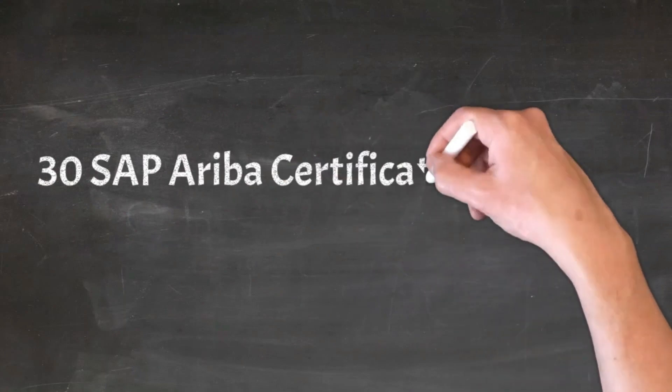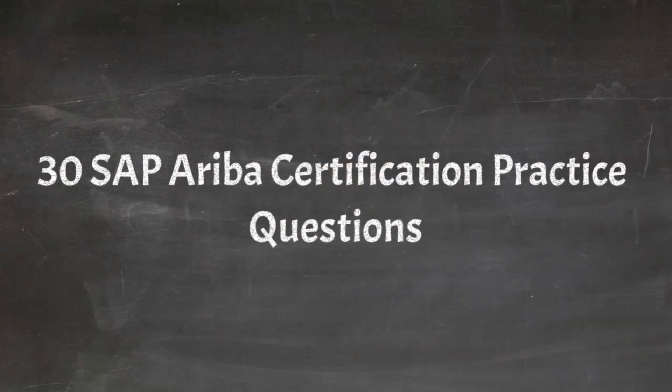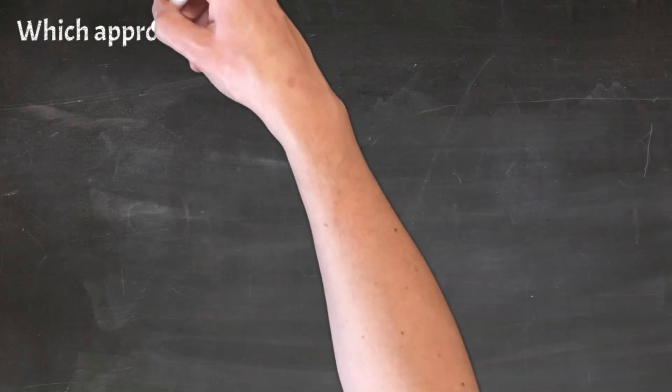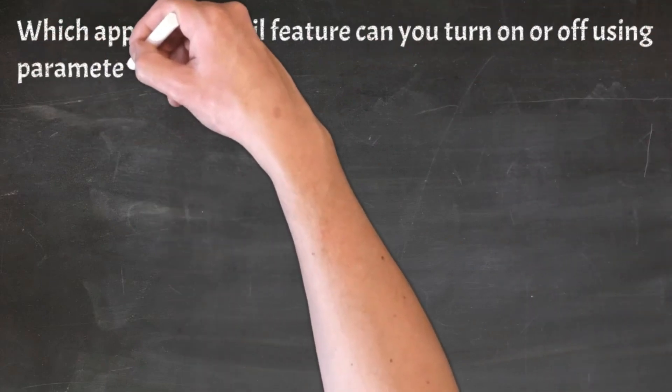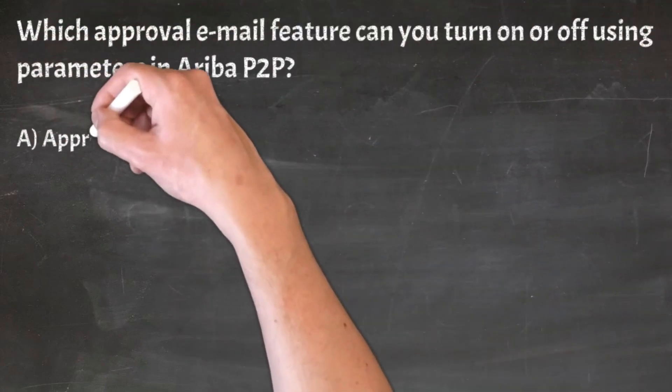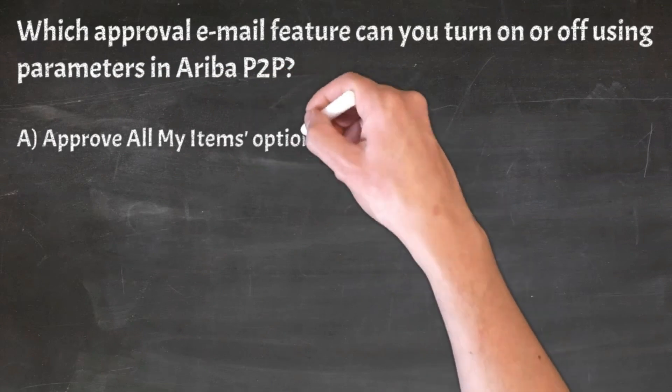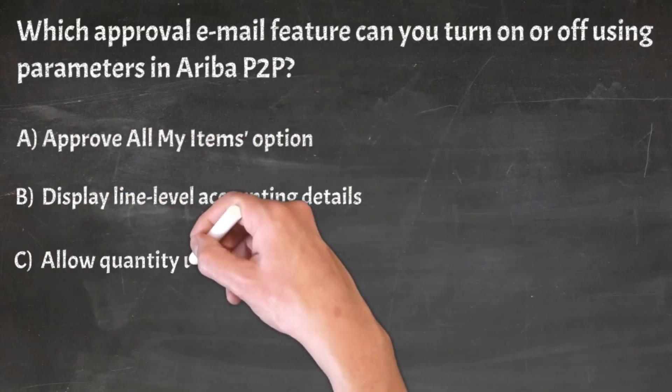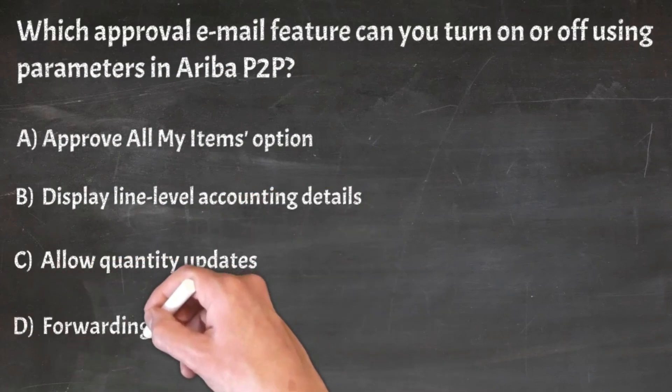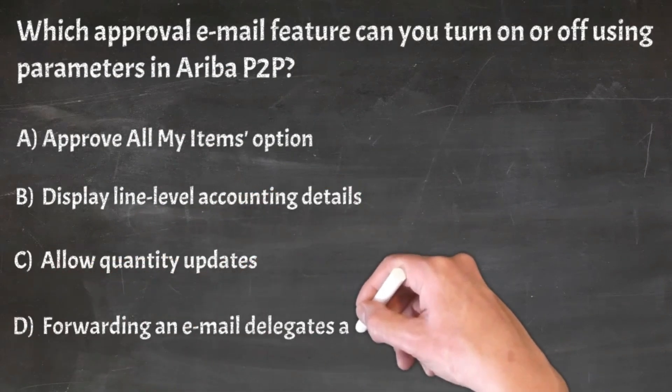30 SAP Ariba Certification Practice Questions. Question 1: Which approval email feature can you turn on or off using parameters in Ariba P2P? A. Approve All My Items option, B. Display line level accounting details, C. Allow quantity updates, D. Forwarding an email delegate's approval.